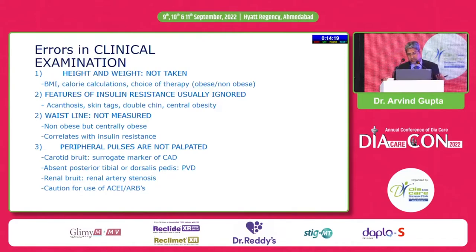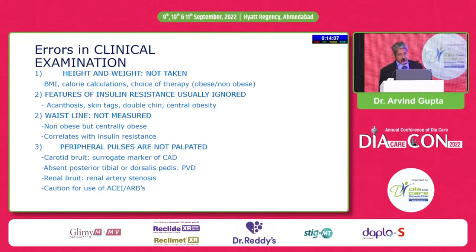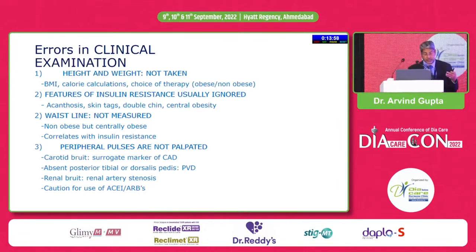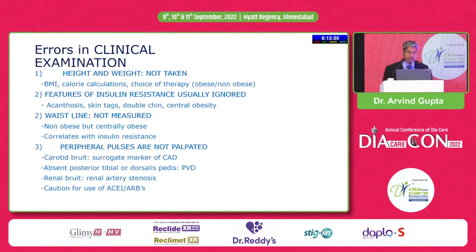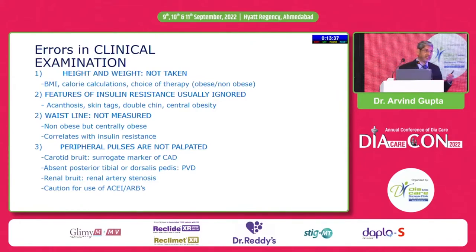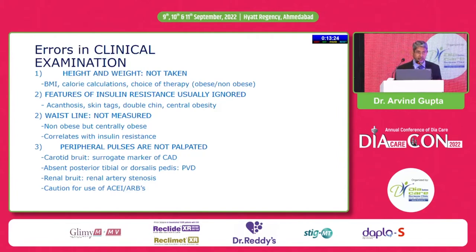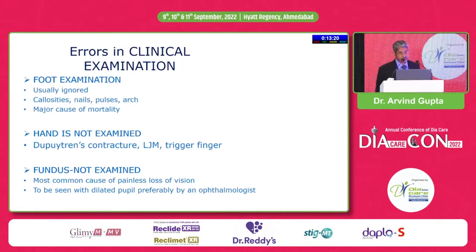Features of insulin resistance can be looked for and medications designed accordingly. Waistline measurements are most often omitted. Peripheral pulses we often miss. After COVID we see virtual patients, and unfortunately we miss most of the clinical examination. Bruits are very important as a surrogate marker for coronary artery disease. The renal bruit is especially important because if we are giving ACE inhibitors and ARBs and the patient has renal artery stenosis, these are contraindicated drugs.